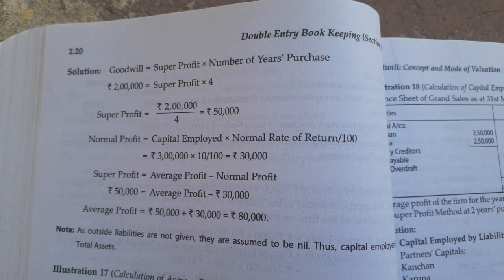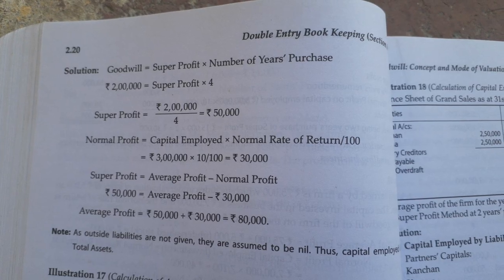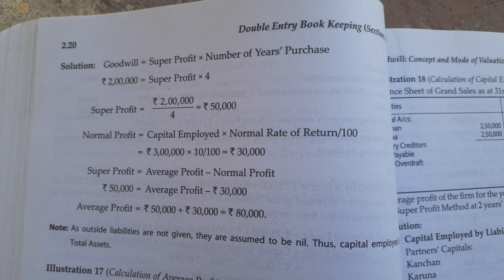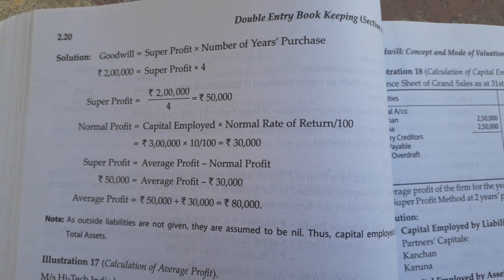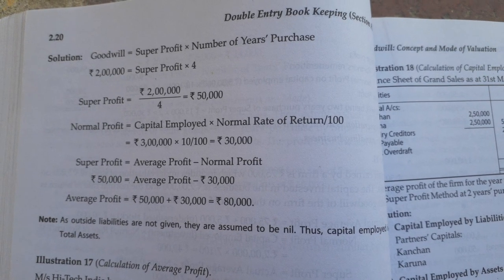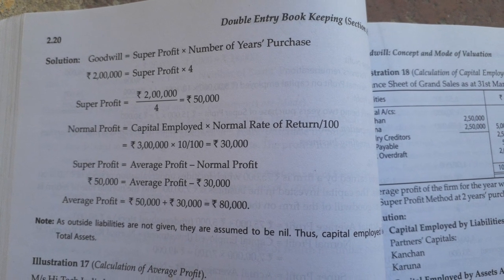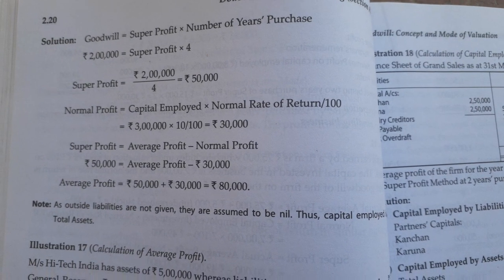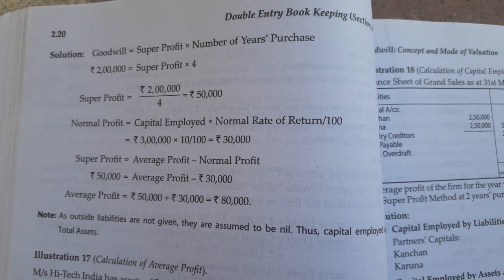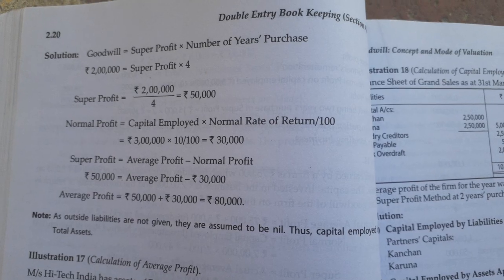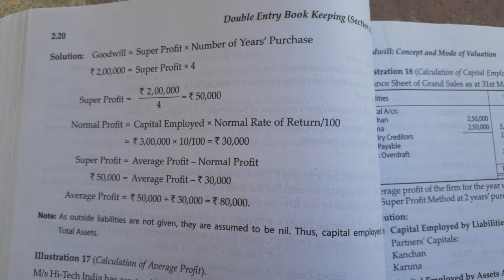The third step is normal profit. Normal profit is capital employed multiplied by the normal rate of return. Capital employed is 3,00,000 and rate of return is 10%, giving normal profit of 30,000. Super profit equals average profit minus normal profit. We need to find average profit: super profit is 50,000 and normal profit is 30,000, so average profit comes to 80,000. Thank you.